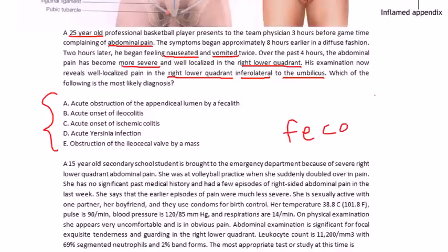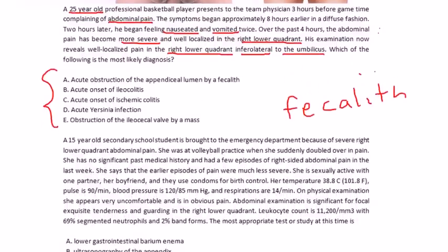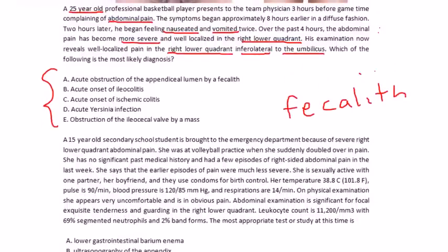Well, I remember one of the causes of appendicitis is fecalith. Remember the fecalith that gets trapped inside that lumen right here. This is the appendix, and the fecalith gets trapped inside and then causes the inflammation and bacterial overgrowth and eventually ischemia. So right there. Acute obstruction of the appendiceal lumen by fecalith. So the answer is A.